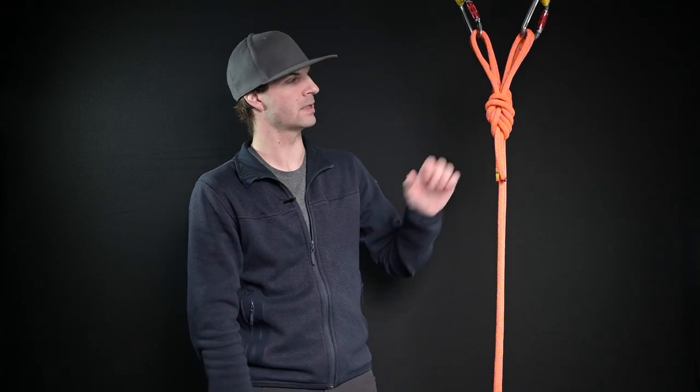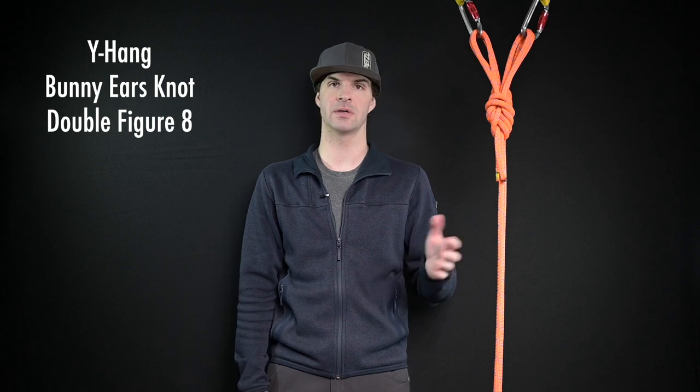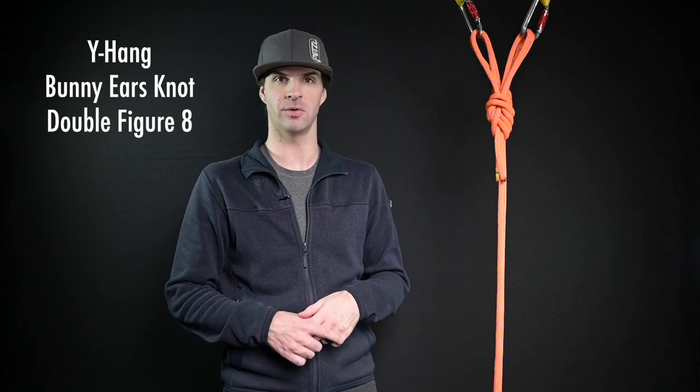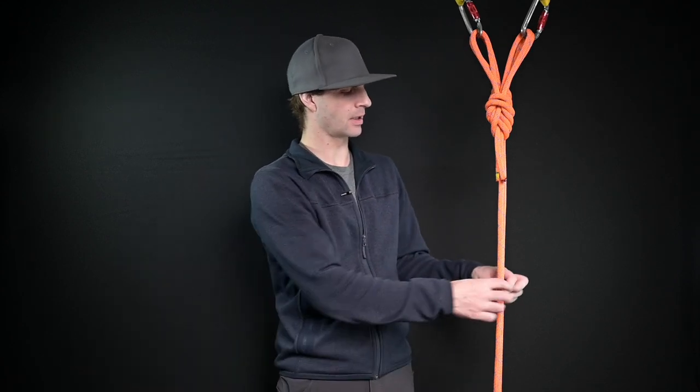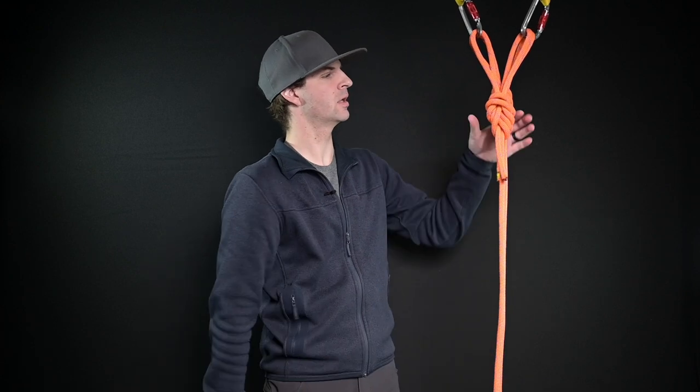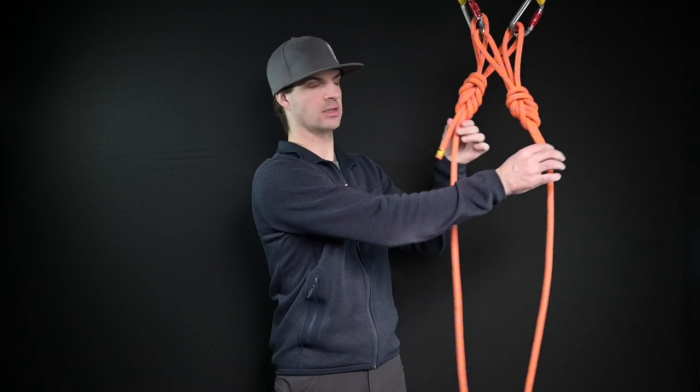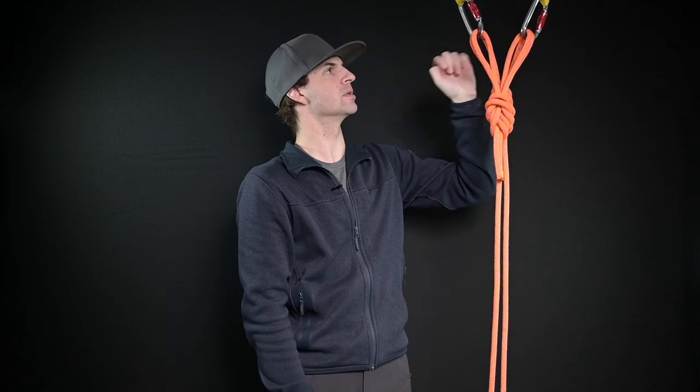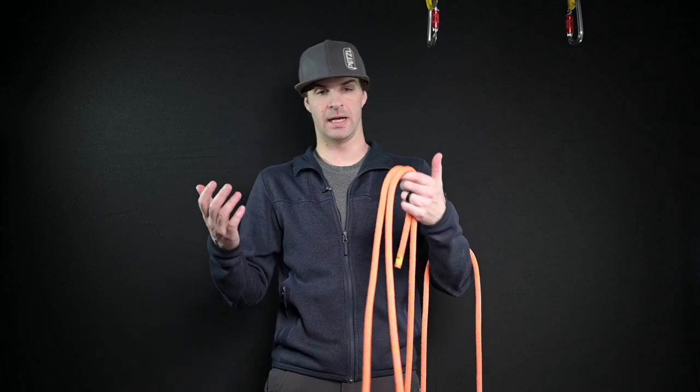Alright this here is the figure eight with bunny ears or otherwise known as the double figure eight. Here I have both ropes in the middle using the double figure eight. I got two of those here going up to two carabiners and two slings. So let's show you how this is made. Now I got my rope here. I got a decent amount depending on how big this span is.